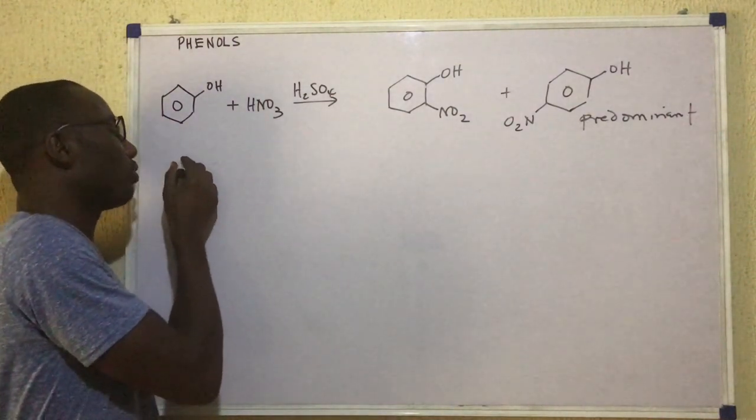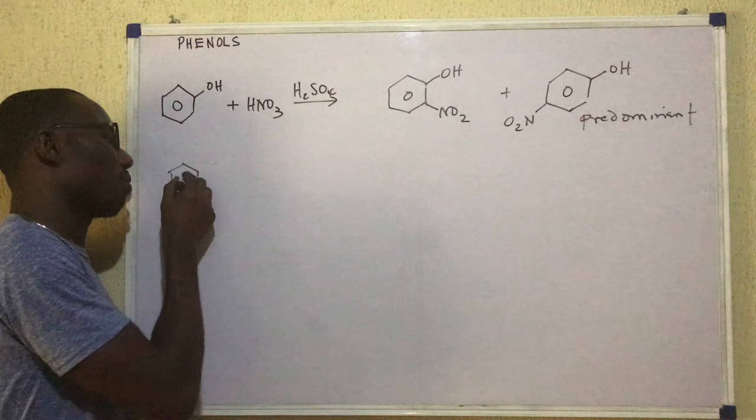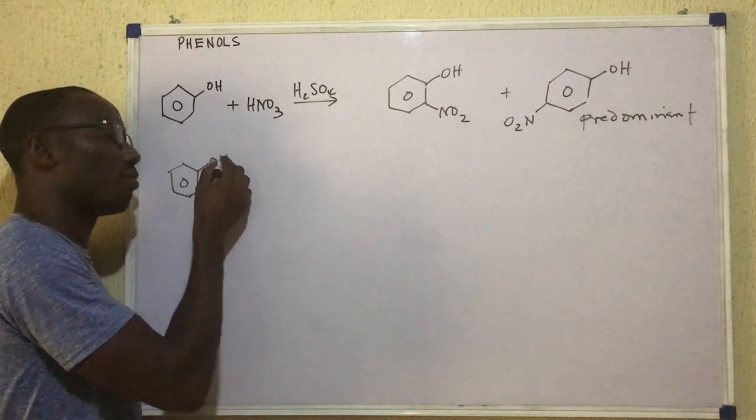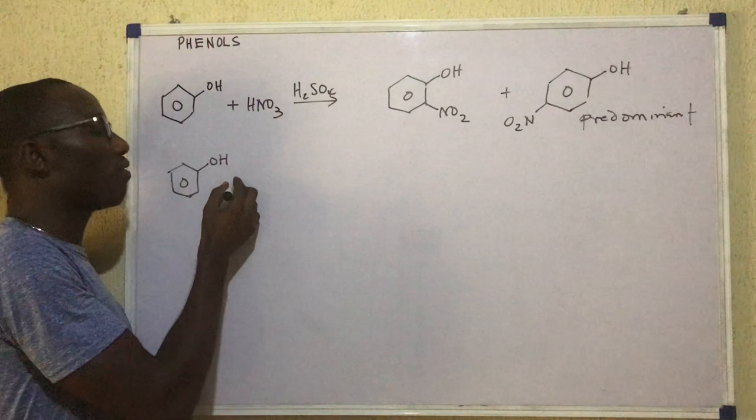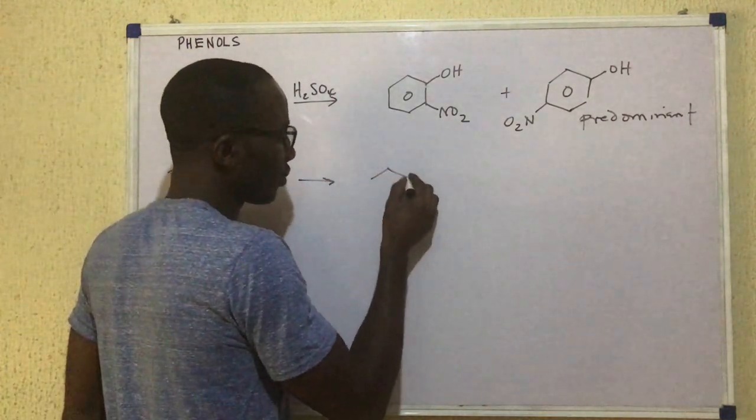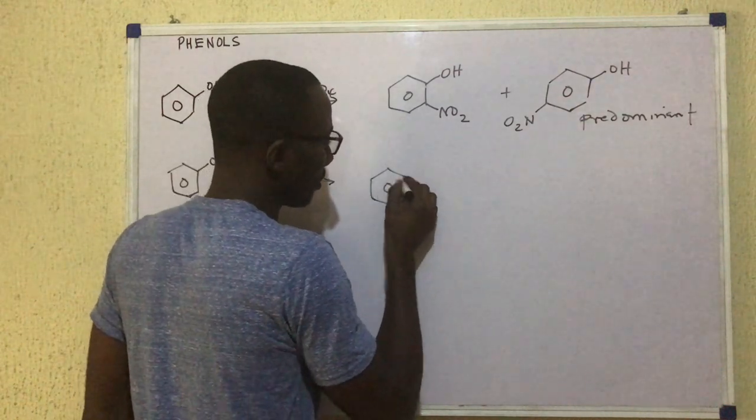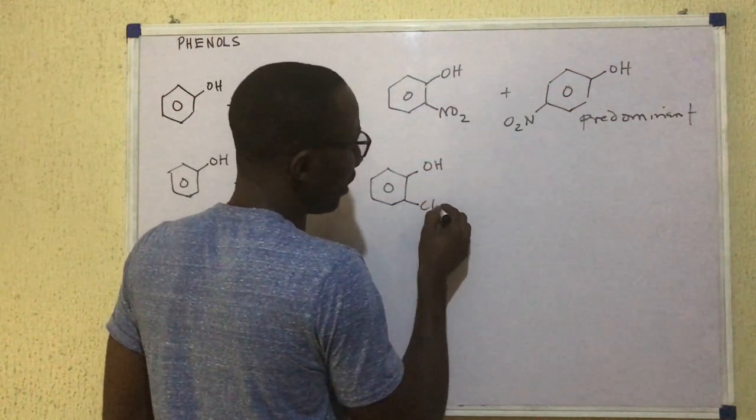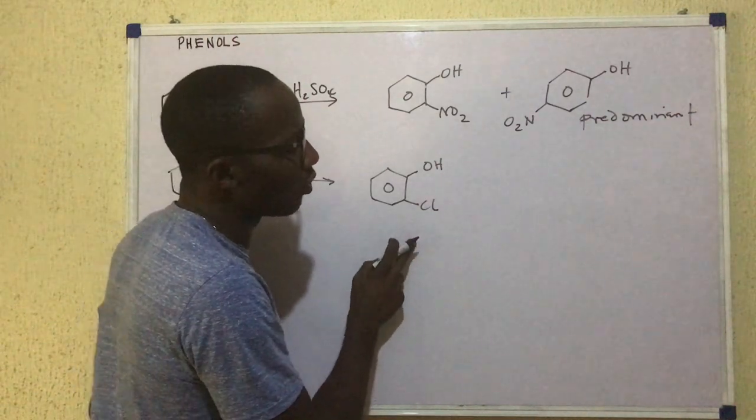Then there could be halogenation of phenol. When phenol reacts with chlorine, we get two products like this. This is OH and that's Cl. We call this ortho-chlorophenol.